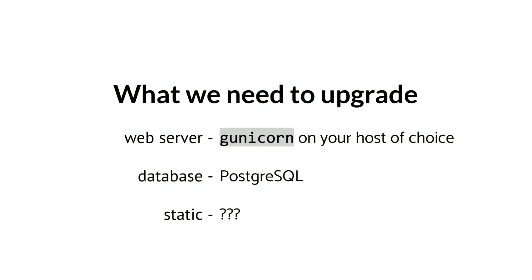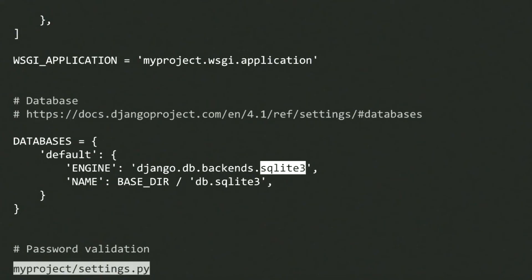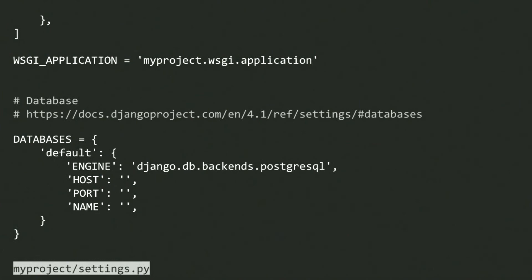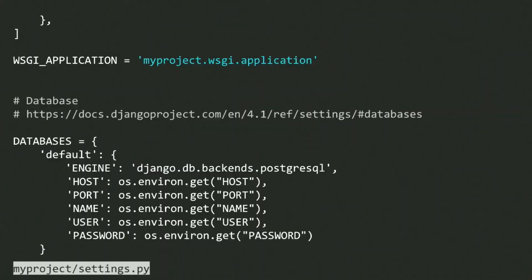To get Postgres working, go into your settings file and change it from SQLite. Depending on your hosting platform, there's probably a click-button "get Postgres database" option that will provide you with a hostname, port, and database name. Pop those into your settings file. Do not ever put your username and password into your settings file — your hosting provider may allow you to reference these values as encrypted environment variables. Please do this.